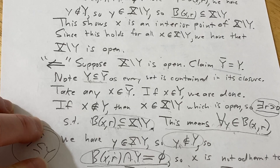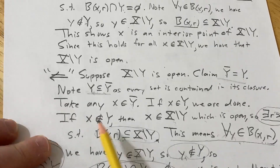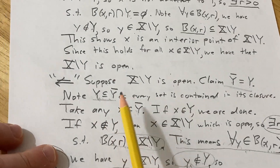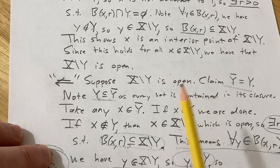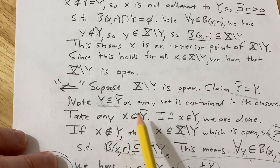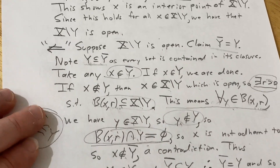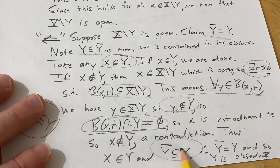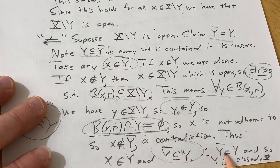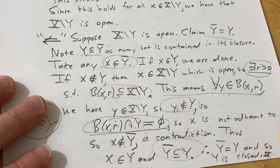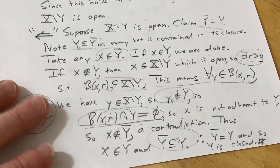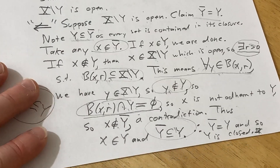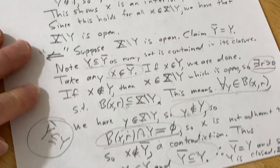If it's not adherent to Y, that means it's not in the closure of Y — but we assumed it was, so that is a contradiction. Therefore X must be in Y, we have the inclusion, and by double inclusion they are equal, so Y is closed. I hope this video has been helpful. Good luck.